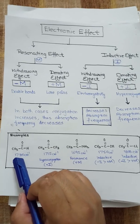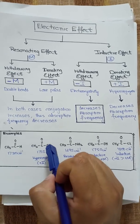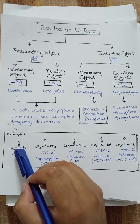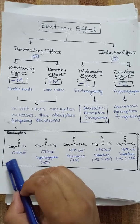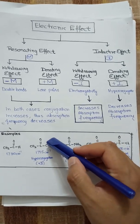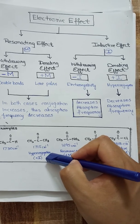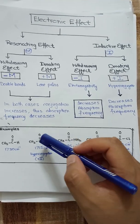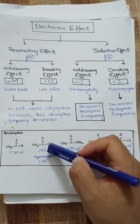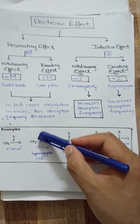We will take a single example representing the same functional group with different atoms or molecules attached. In acetaldehyde, with hydrogen at one end, the carbonyl group C=O stretching gives an absorption frequency of 1730 cm⁻¹. When it is attached with a CH₃ group, as in acetone, due to hyperconjugation (electron donating inductive effect), the absorption frequency decreases. This increases the single bond character of the carbonyl group.